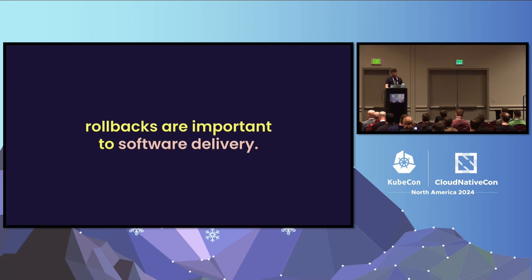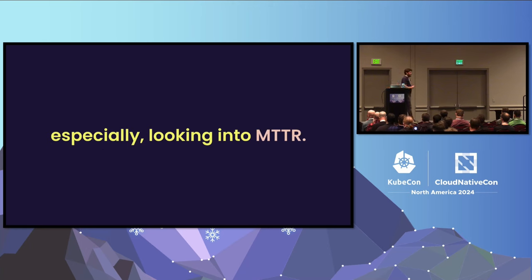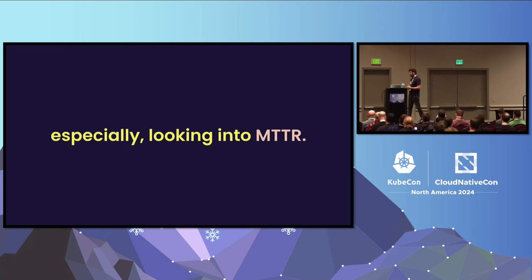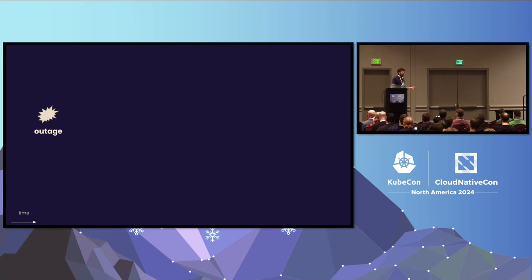Rollbacks are a very important capability for teams doing software delivery, specifically when we look at a metric called MTTR — mean time to recover. We deploy changes, our developers evolve the application, we deploy to production, we make configuration changes, and at some point we sometimes have an outage.